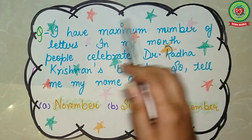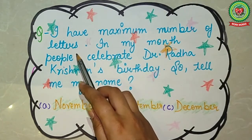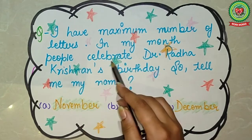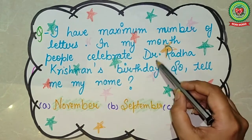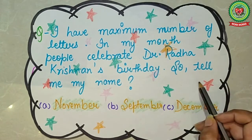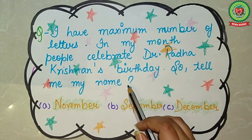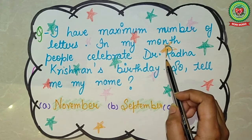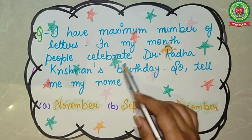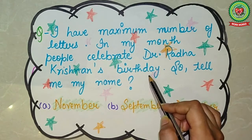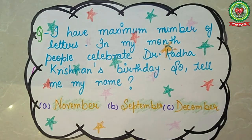Coming to the next example. Read the statement: I have the maximum number of letters in my month. People celebrate Dr. Radhakrishnan's birthday. Tell me my name. On 5th September we celebrate Dr. Radhakrishnan's birthday, so the answer is September.